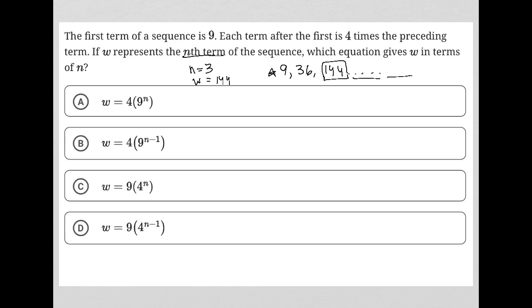So which one of these answer choices gets me 144 when I replace n with 3? So I'm practically using plug-in information from the question. Or maybe I should think of this as translate word problem, TWP.